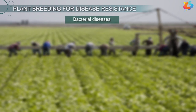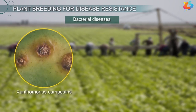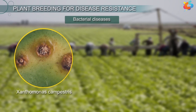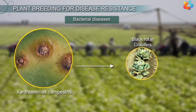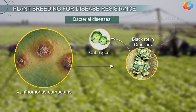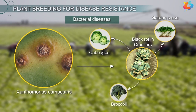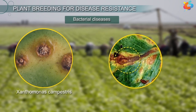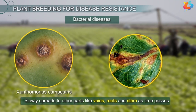Let us now discuss a few bacterial diseases. A bacterium called Xanthomonas campestris causes a disease called black rot in crucifers. Crucifers are leafy vegetables like cabbages, garden cress, broccoli, etc. The disease looks like a yellow-brown patch on the leaves which slowly spreads to other parts like veins, roots and stems as time passes.